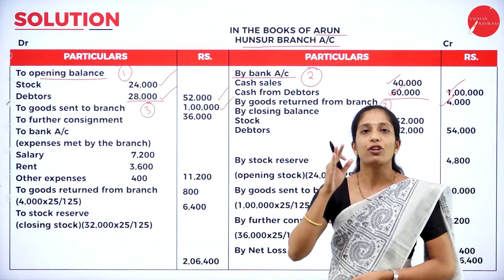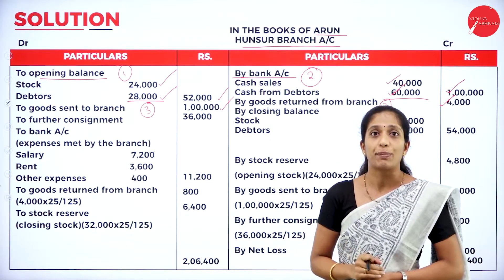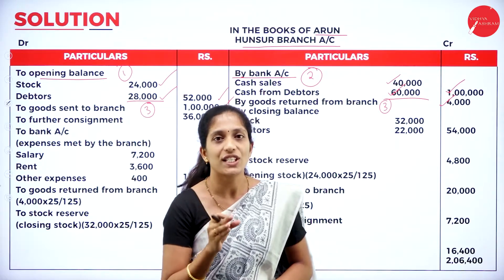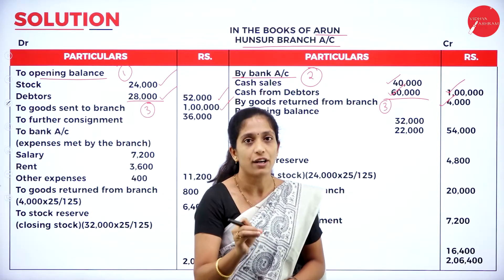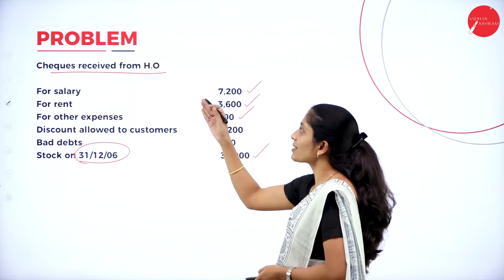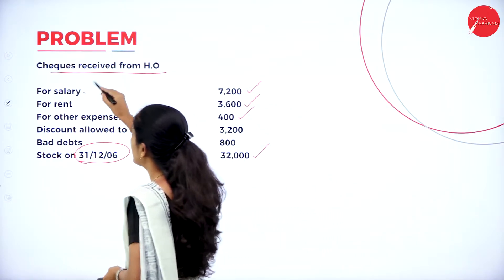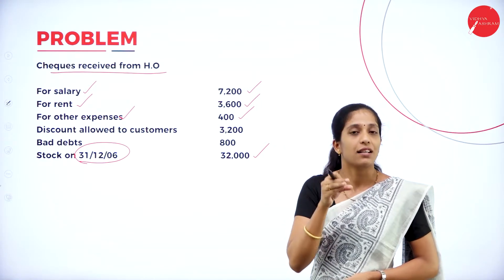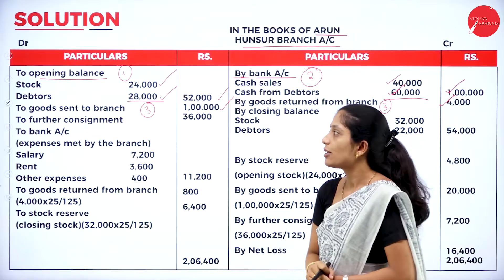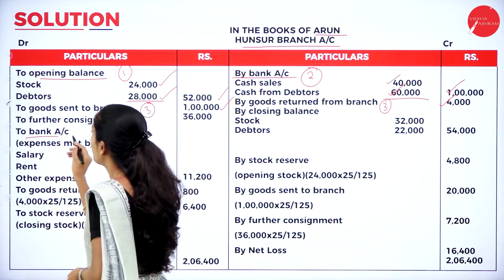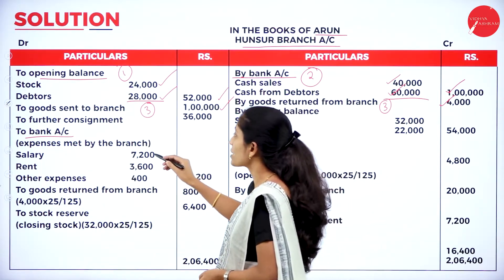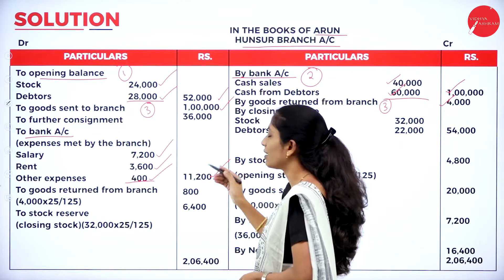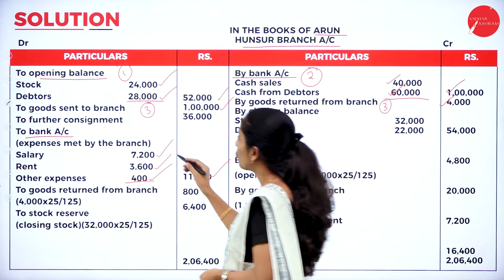Fourth step: record all expenses incurred by the branch, which are paid by the head office. Checks received from head office cover salary 7,200, rent 3,600, and other expenses 400. Record on the debit side as 'to bank account — expenses met by the branch.' Total: salary 7,200 + rent 3,600 + other expenses 400 = 11,200. That is the fourth step.